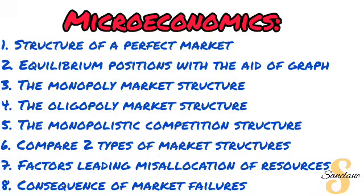If you choose microeconomics, you can expect possible essays on market structures. The first is the perfect market structure, including discussing equilibrium positions with the aid of a graph. Be careful whether the question specifies long-run or short-run equilibrium positions, as there is a difference. We are also looking at imperfect market structures: monopoly, oligopoly, and monopolistic competition.